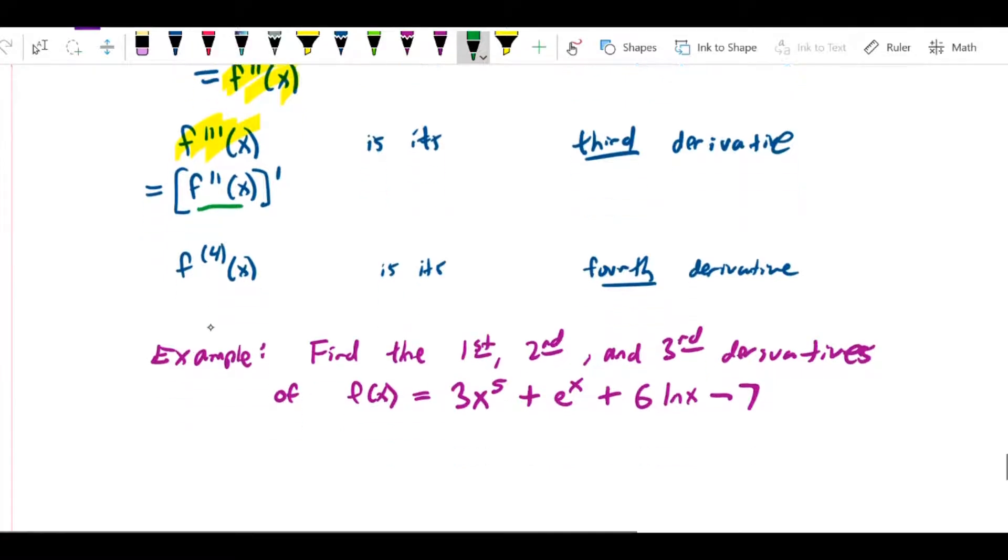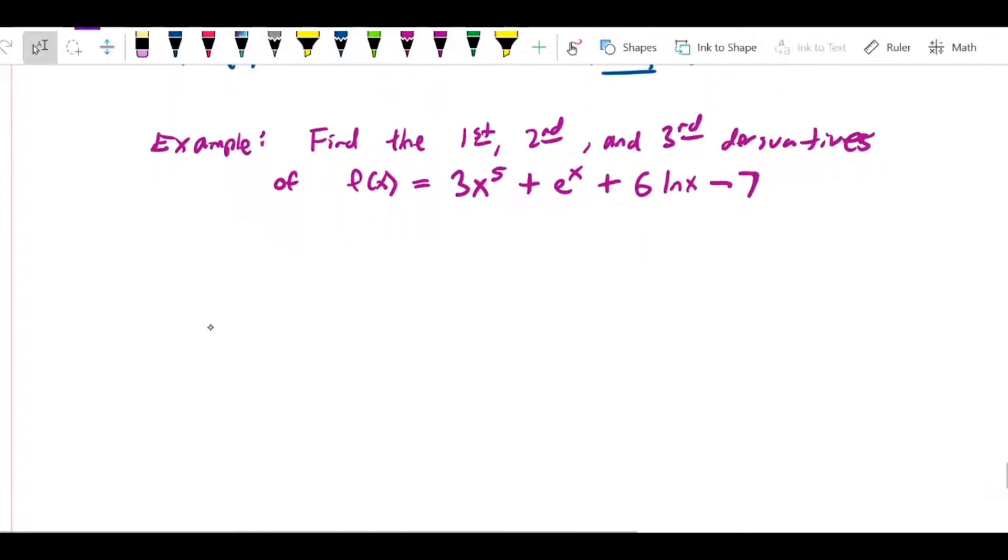As an example, let's take the function f(x) = 3x^5 + e^x + 6ln(x) - 7 and find its first, second, and third derivatives.